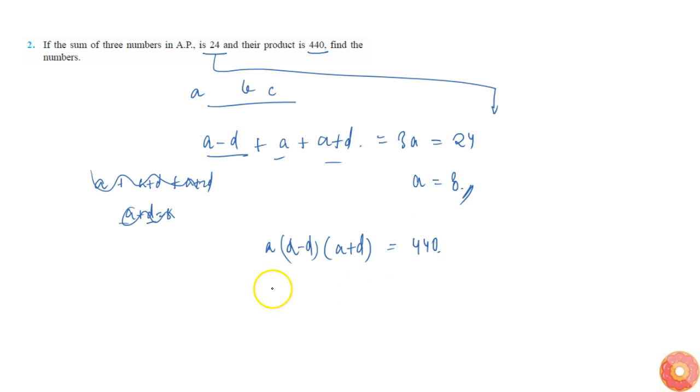So this I can write as a into a squared minus d squared, this is equal to 440. From this we know a is equal to 8, so 8 into 64 minus d squared is equal to 440.